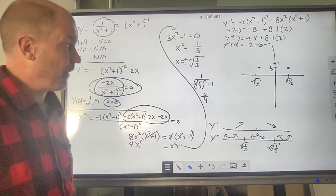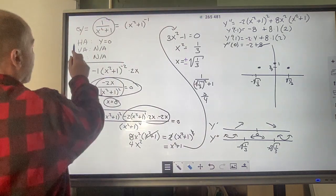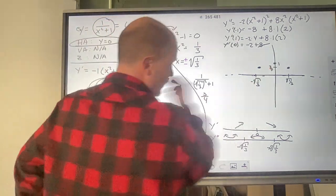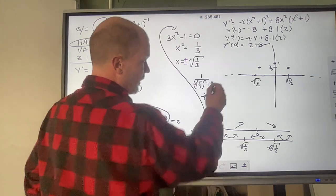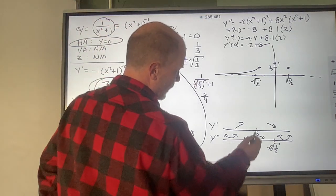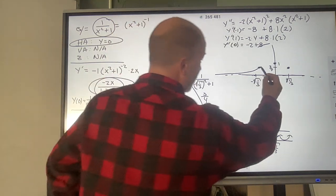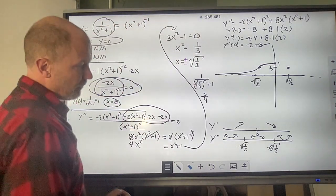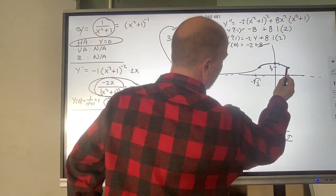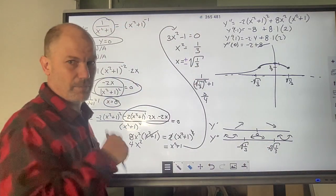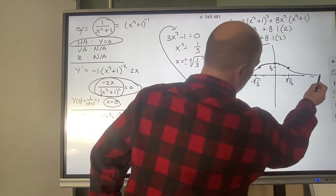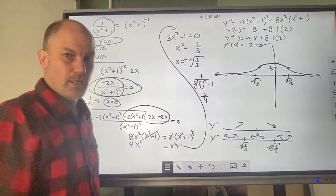Now it's finally time to do our graphing. We have a horizontal asymptote at y equals 0. To the far left, I have a positive slope with positive concavity — a scoop upward approaching the asymptote. Between negative √(1/3) and 0, positive slope with negative concavity. From 0 to positive √(1/3), negative slope with negative concavity. Then beyond positive √(1/3), negative slope with positive concavity — scooping down and approaching the horizontal asymptote. The result is a little bell-shaped bump.